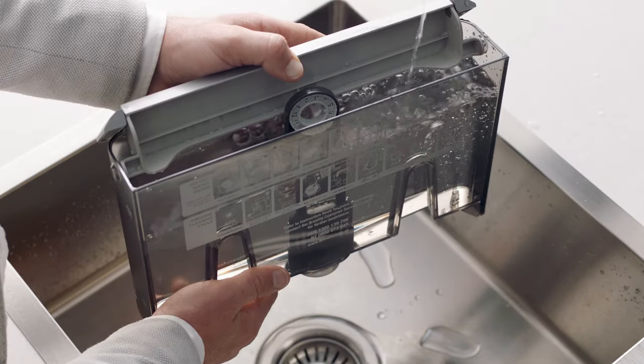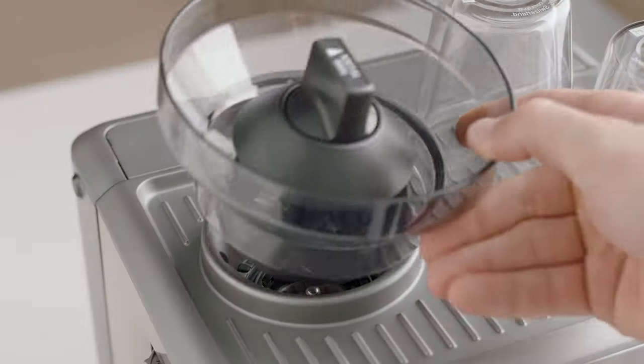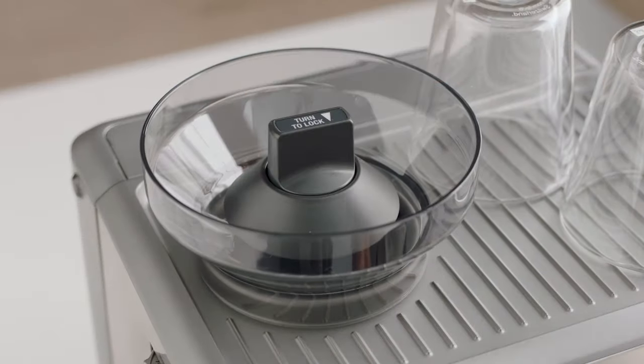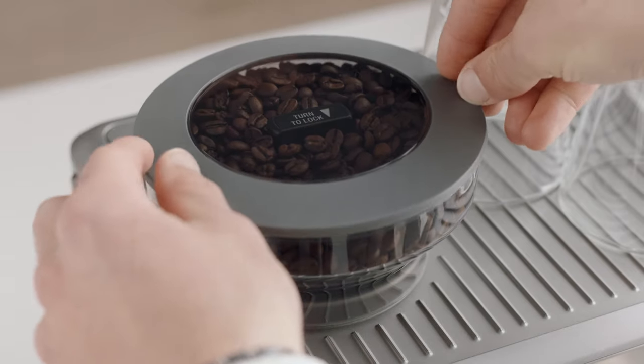Place the water tank into the machine. Fit the bean hopper into the top of the machine like this, locking it into place. Press the power button to switch the machine on.